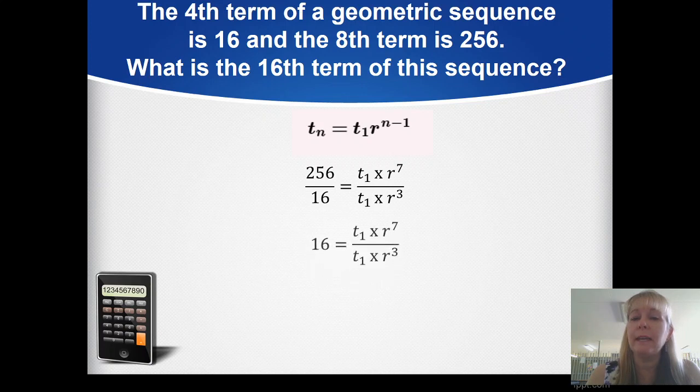256 divided by 16 equals 16, so I've simplified the left side. Now for the right side: it looks complicated, but t₁ is on top and bottom. Anything divided by itself equals 1, so t₁ cancels out, leaving just the variable r. Let's clean that up.